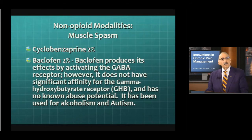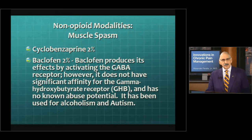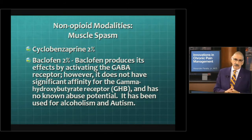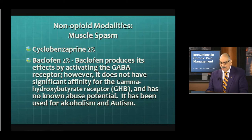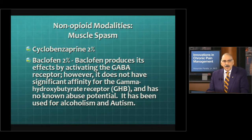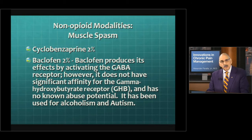We have drugs that can help with muscle spasm that are non-opiates. Cyclobenzaprine and baclofen are excellent examples, because baclofen is a drug we've used in spinal cord injuries for spasm, but it also has a potential for helping with neuropathic pain. This is activated by the GABA receptors. However, it has a very low affinity for the gamma-hydroxybutyric receptor, and so therefore it has a very low tendency to cause addiction. It has been used in patients for alcoholism and also for autism.